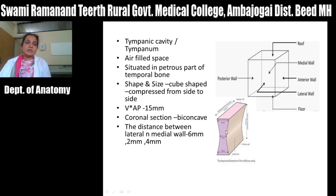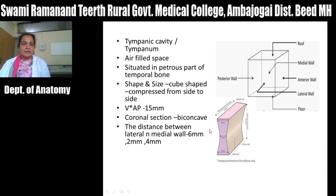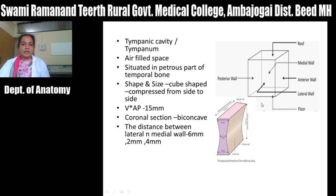What is the middle ear? The middle ear is also called as a tympanic cavity. It is an air-filled space which is present in the petrous part of the temporal bone. The shape and size: it is a roughly cuboidal shape and it is compressed from side to side, that is the medial and lateral walls are compressed. The vertical and anteroposterior diameter is almost equal, that is about 15 mm. On coronal section you can see that it is a biconcave shape. The distance between the medial and lateral wall near the roof is about 6 mm, in the middle it is about 2 mm, and near the floor it is about 4 mm. It has an anterior wall, posterior wall, medial wall, lateral wall, one roof, and one floor.